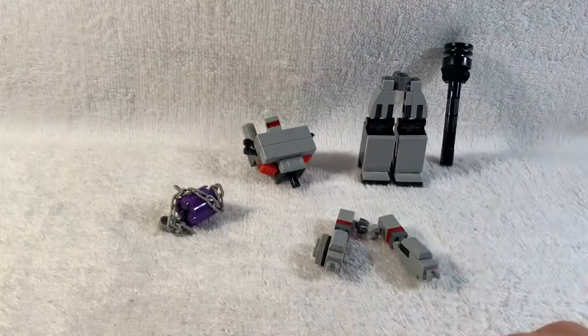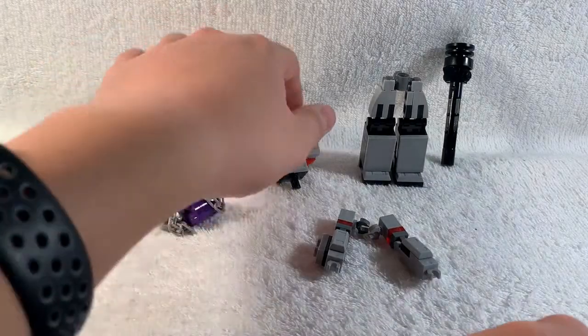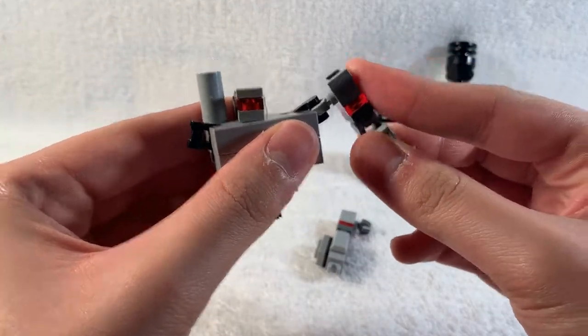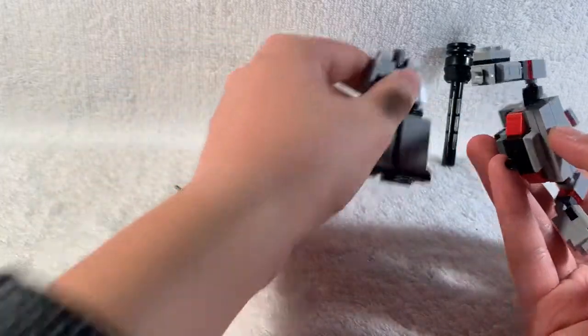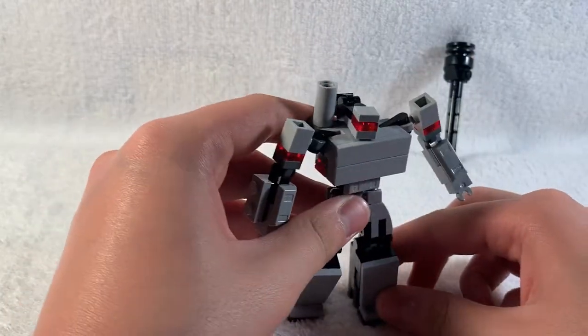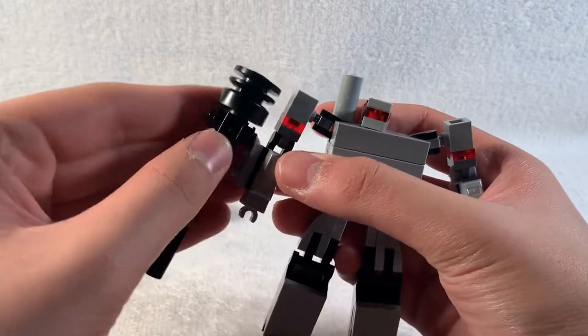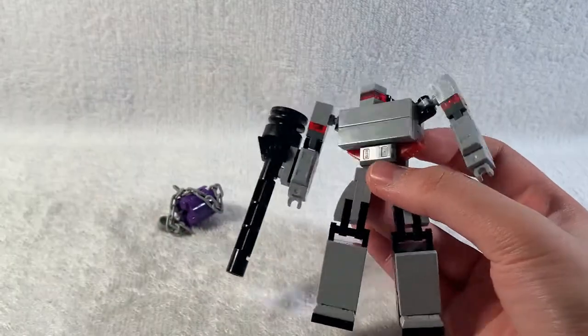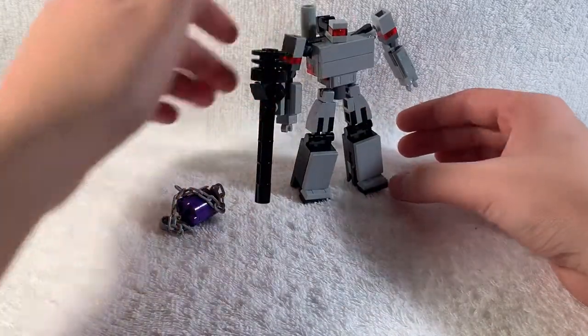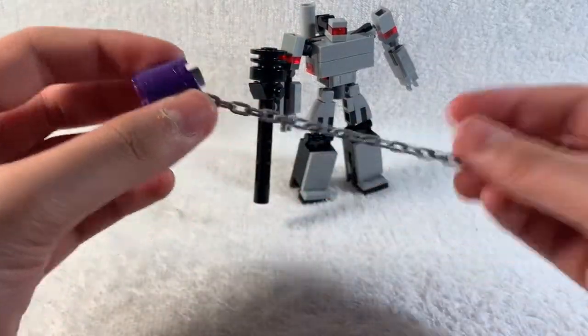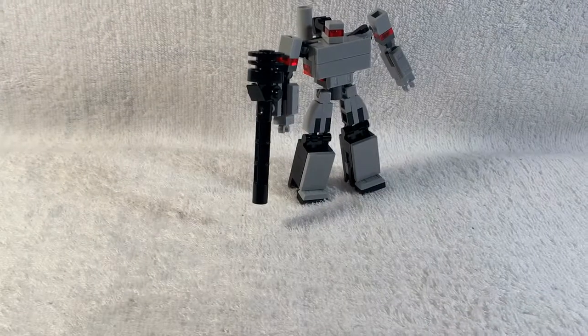So here are all the pieces fully built for Megatron. Then obviously you just take the arms, peg them onto the shoulders, peg the waist to the torso, and then peg the fusion cannon on the top. And then Megatron is done. And obviously you can switch out the hands for the Energon Mace. I'm not gonna do that right now, but yeah.